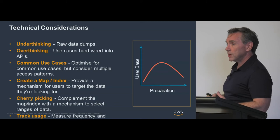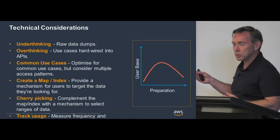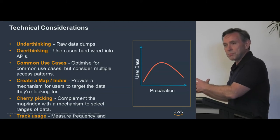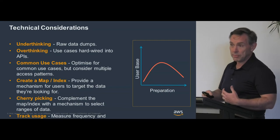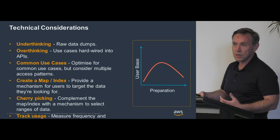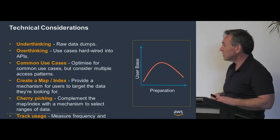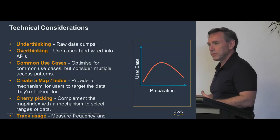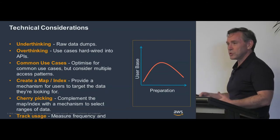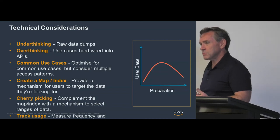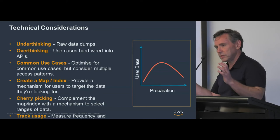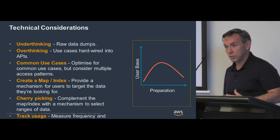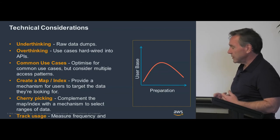Ideally you cater for multiple use cases — build your API but also make data available in a more raw format so people can slice and dice it their own way. You can also optimize for common use cases. In our wind farm modeling example, the provider did a techno-economic analysis converting wind speeds into actual shaft power outputs for turbines, so local agencies or power authorities could make decisions about whether to place wind turbines in a location — moving from the meteorological domain to the economic domain. Also, build a searchable map or index, provide a cherry-picking mechanism for range-type selections, and track usage.